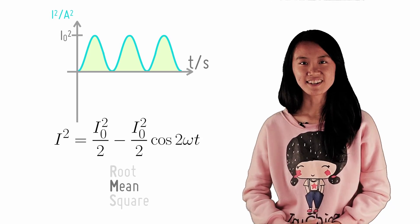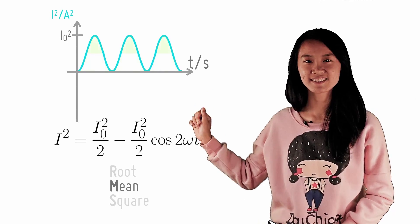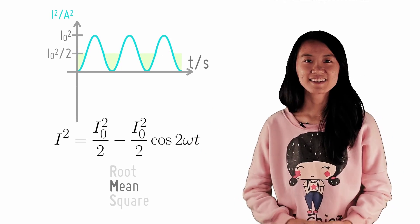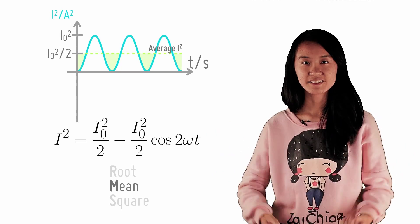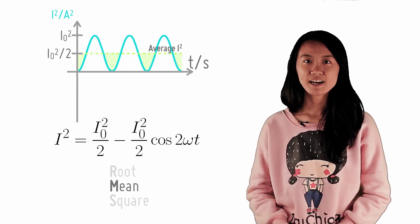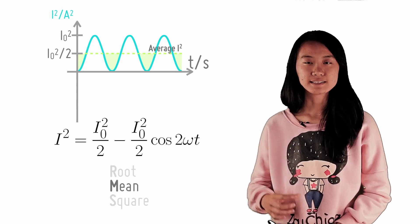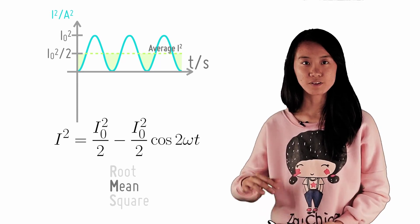If you observe this graph, this portion can be surgically grafted onto this area and you get a rectangular block of area under the new graph. Here, we can simply read off the value on the y-axis to find that average I² is I₀²/2.